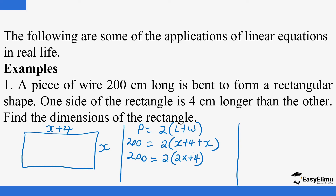This equation is used to solve this particular kind of problem in real life. So we have: 200 equals — opening the bracket, we multiply what's outside the bracket by both terms inside. We have two terms, 2x and 4, so we multiply both by 2. The first gives 4x and the second gives 8.